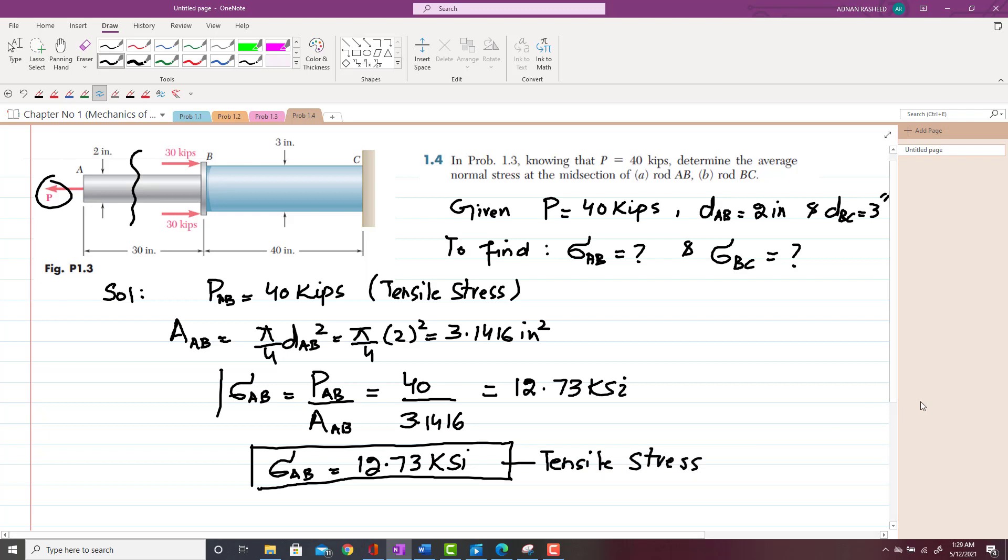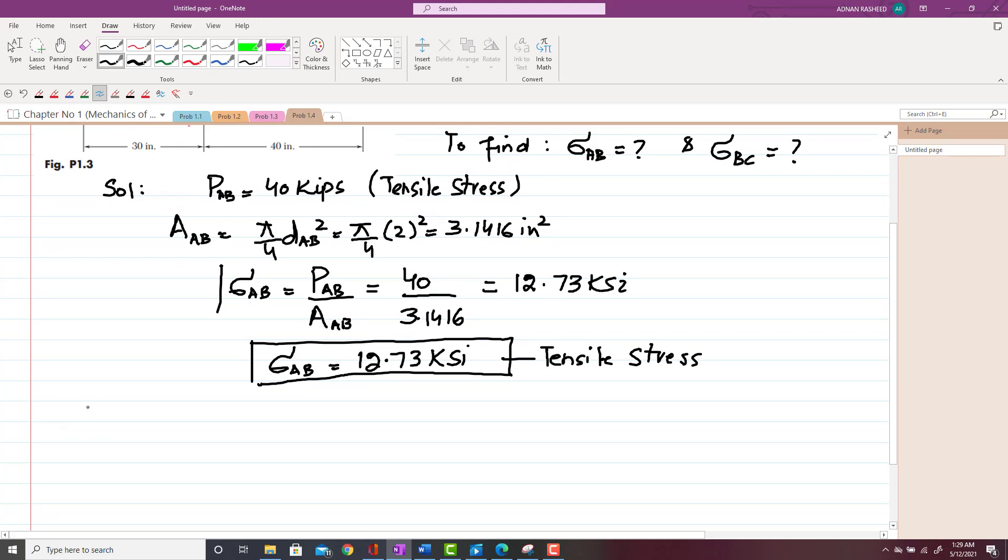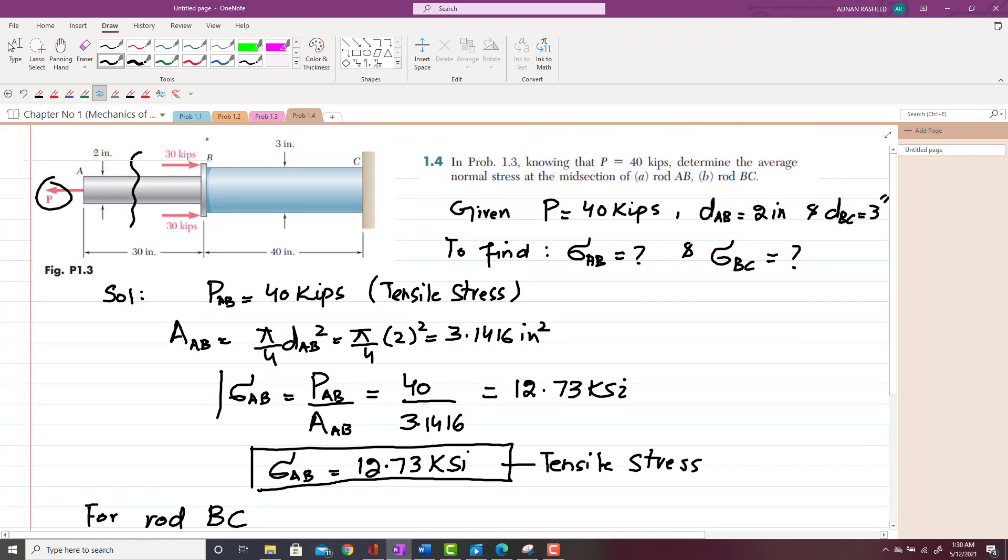Now we will solve for rod BC. You can see from the figure that this rod BC is subjected to two forces, 30 kips each, and this P. So total load acting on this BC will be this force minus this. So this is 60 force acting in this direction and 40 force acting in this direction. So if you subtract these two forces, you will get a negative load, which shows that this rod BC is in compression.